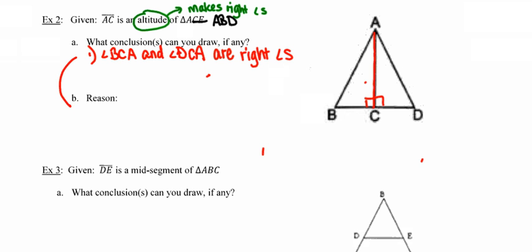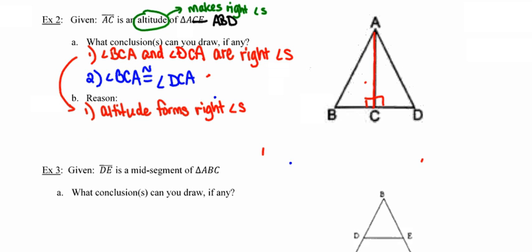And how did I know that? What was my reasoning? Well, my reasoning was because of the altitude. Altitude forms or creates right angles. And another conclusion we could draw then, because they're right angles, we know they have to be congruent to each other. And that's because all right angles are congruent.